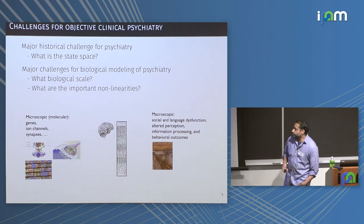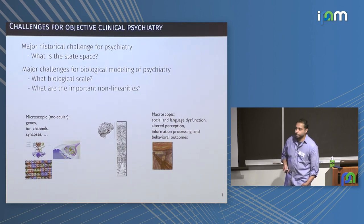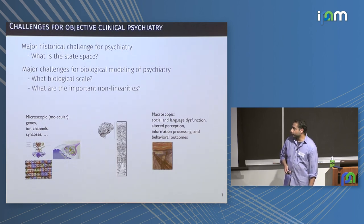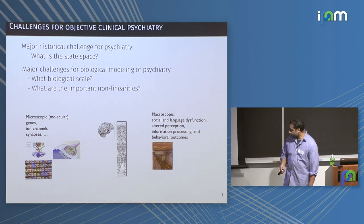The big challenge that's always been an issue for psychiatry since its inception is figuring out what the state space is — how do we characterize clinical cases in some objective way and, hopefully, have them biologically grounded. The big challenge of biological modeling is that we're dealing with huge differences in scale.